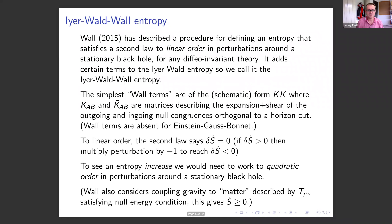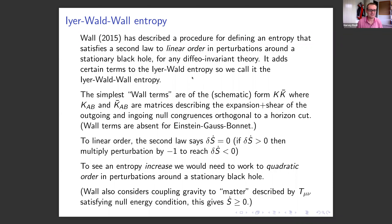Progress with this problem was made seven years ago by Aron Wall. In 2015, Wall described a procedure for defining a black hole entropy for a given theory such that it satisfies a second law to linear order in perturbations around a stationary black hole, for any diffeomorphism-invariant theory. Wall's procedure generates an entropy which adds certain terms to the Iyer-Wald entropy — we call this the Iyer-Wald-Wall entropy.